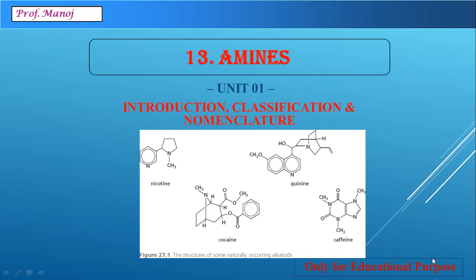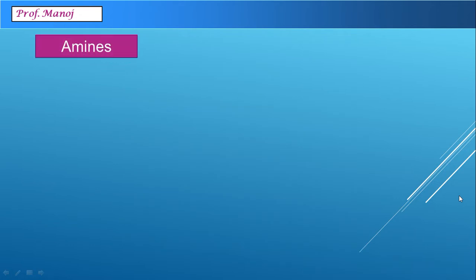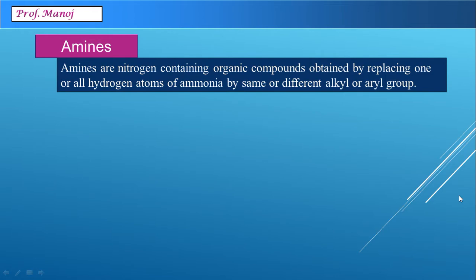Hello students, we will be starting with a new topic today: Chapter Amines. This topic has been divided into four units and the first unit is about introduction, classification, nomenclature and isomerism of amines. Amines are nitrogen-containing organic compounds which are obtained by replacing one, two, or all three hydrogen atoms of ammonia by either same or different alkyl or aryl groups.